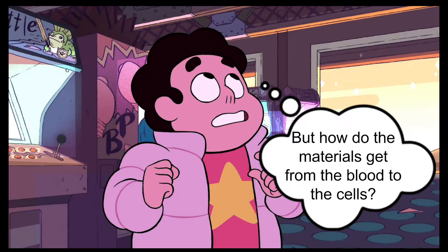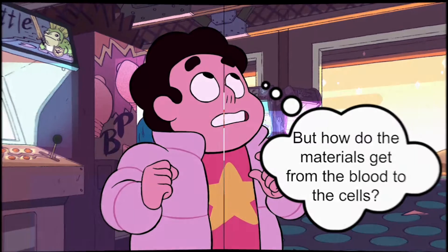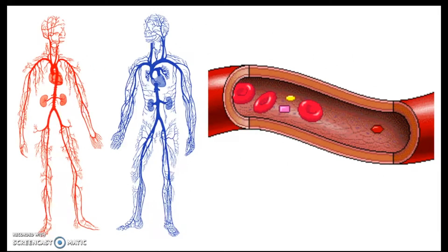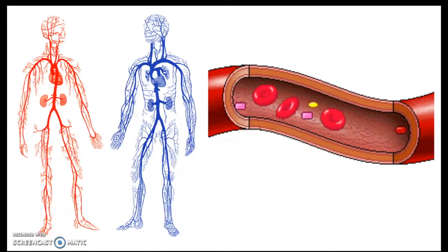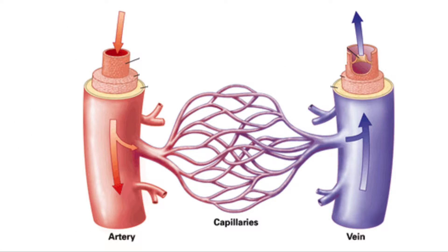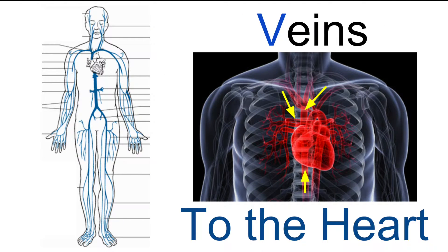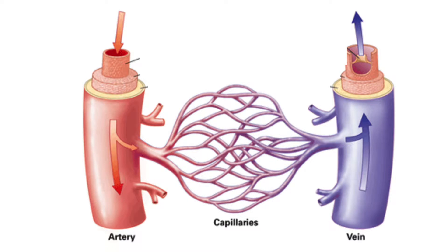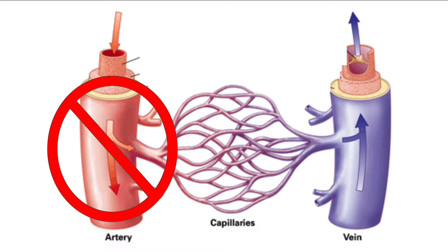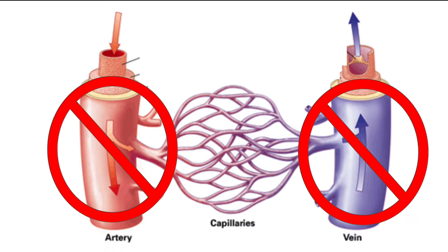But how do these materials get from the blood to the cell? Blood travels through the body via the blood vessels. There are three major types. Arteries carry blood away from the heart. Veins carry blood to the heart. However, neither of these directly bring blood to the cells.